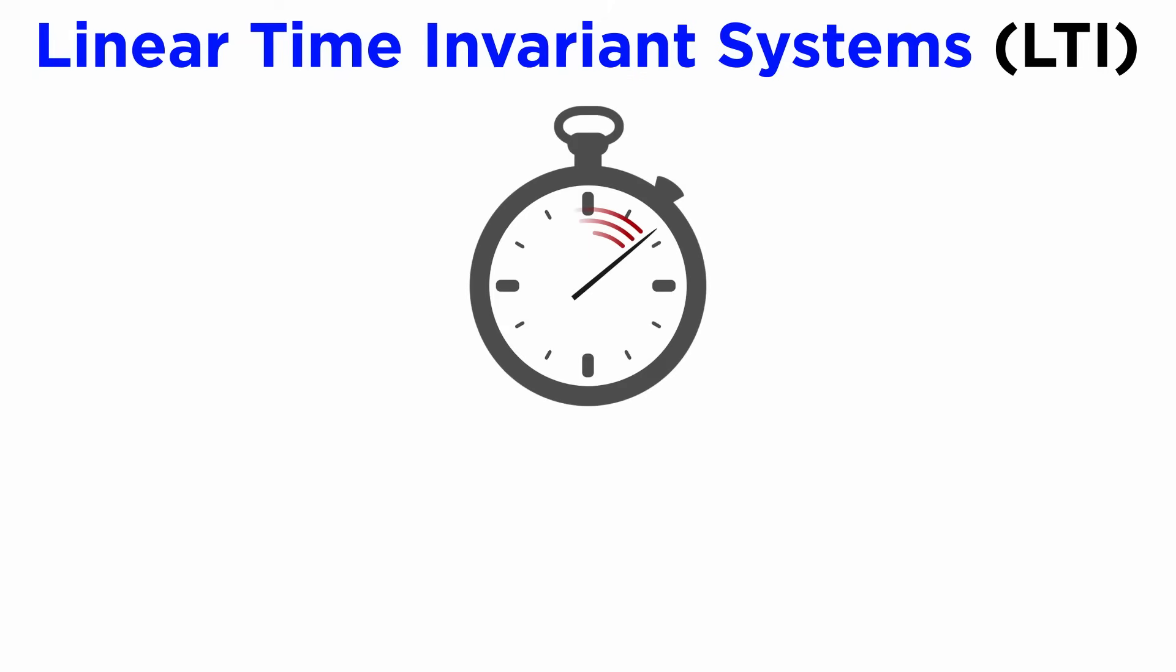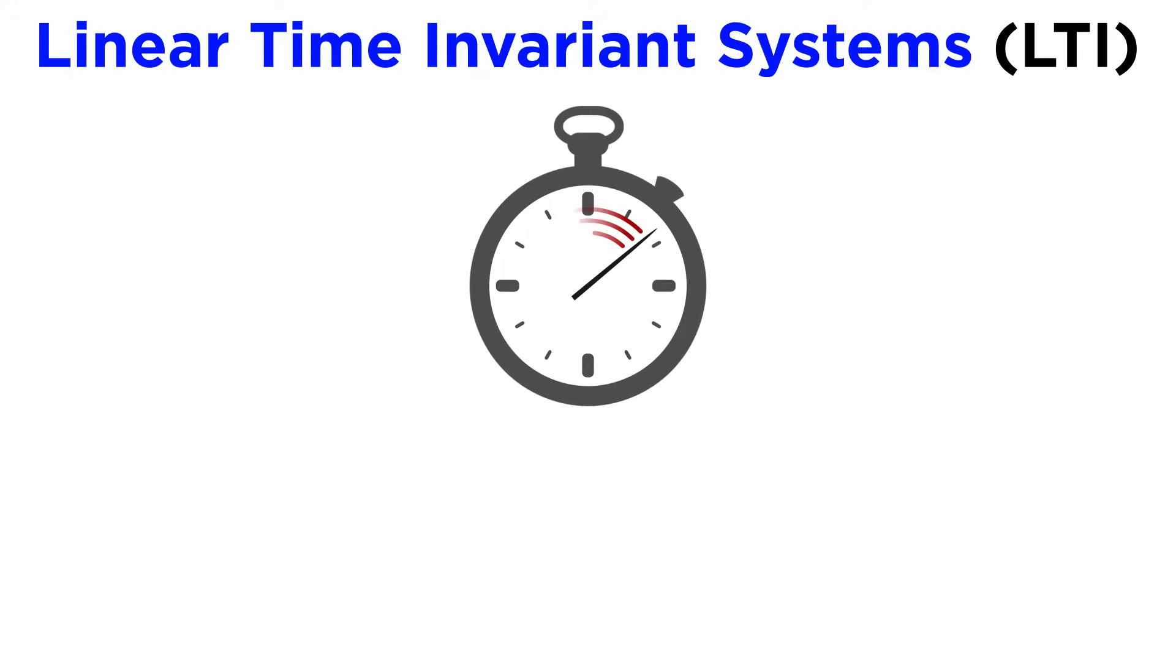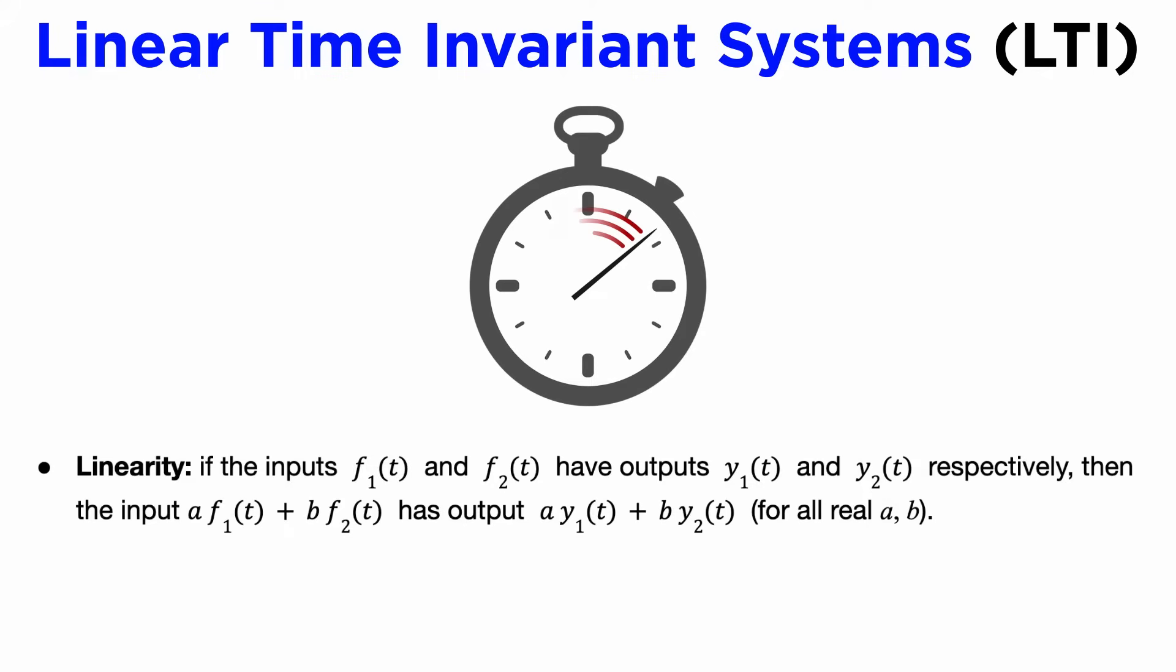Let's now get a bit more precise about these systems. We say that a system is linear time invariant, or LTI, if the relationship between its input and output satisfies two important properties. First, the differential equation that models the system must itself be linear, so that the principle of superposition applies. This allows us to add and scale our inputs, and the same will happen to the output.